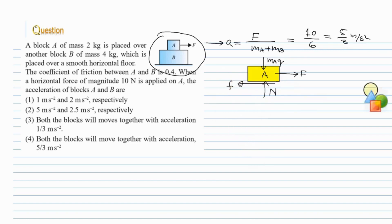Now, let us consider block B. Friction force on block B will act in the forward direction and this friction force on B will be responsible for motion of block B.